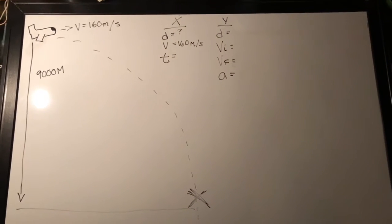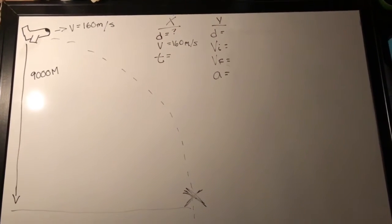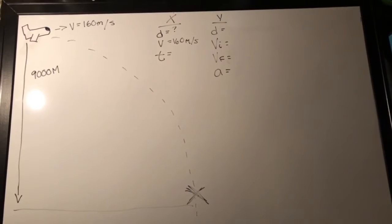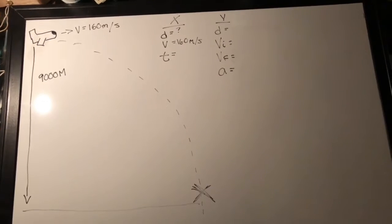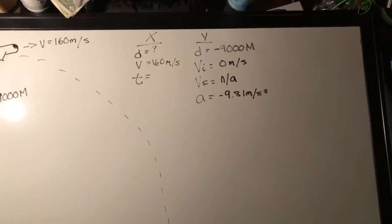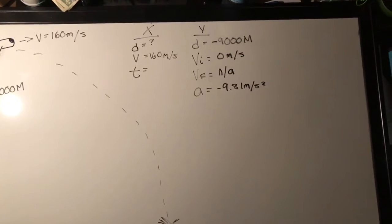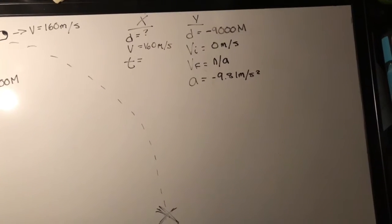And since the times are the same between the x and the y, then we can find the t using the values that we have in the y-axis. So let me fill those in. Our values that we have is distance, which is negative 9,000 meters, because it is dropping and is going down.